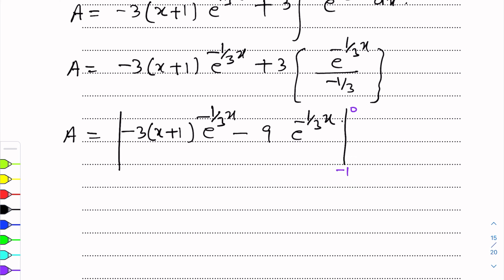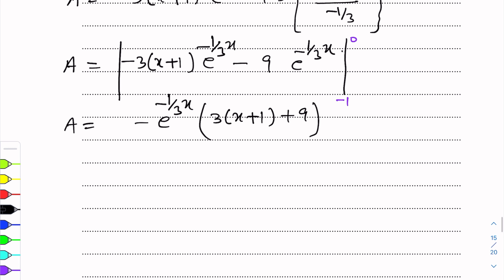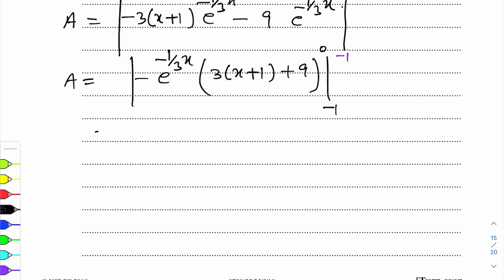Before applying limits, we simplify by taking e^(-1/3 x) as common factor: −e^(-1/3 x)·[3(x+1) + 9], which simplifies to −e^(-1/3 x)·(3x + 12). Now we apply limits from −1 to 0. First put x = 0: −e^0 × 12 = −12.